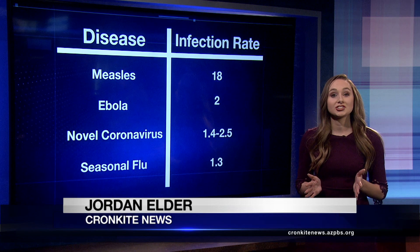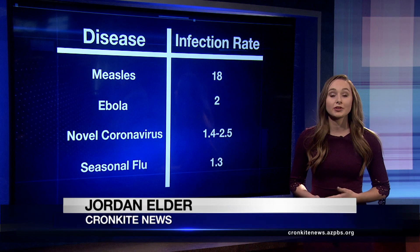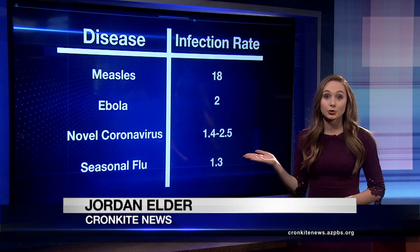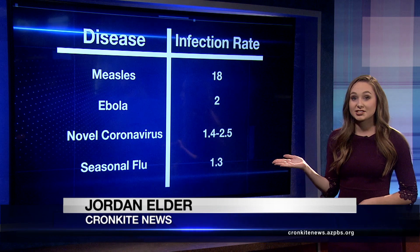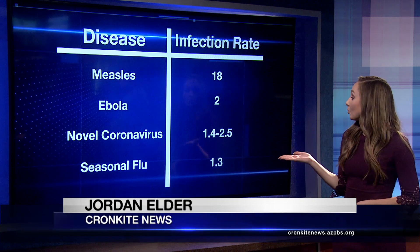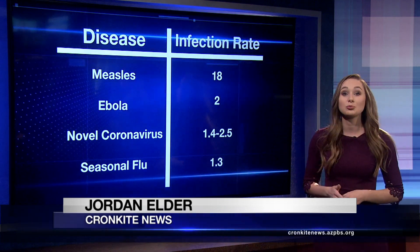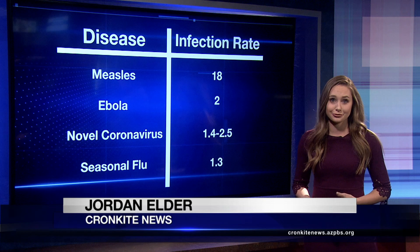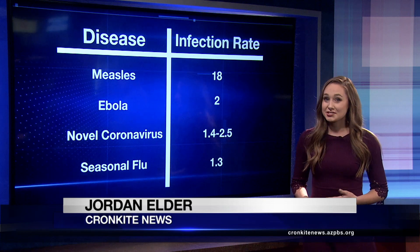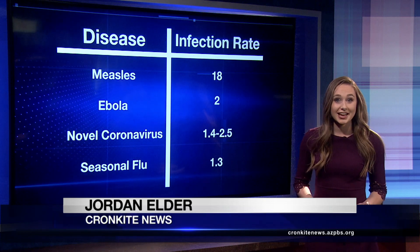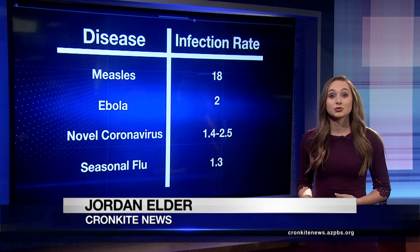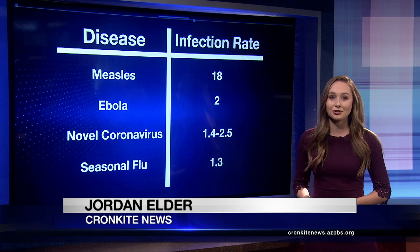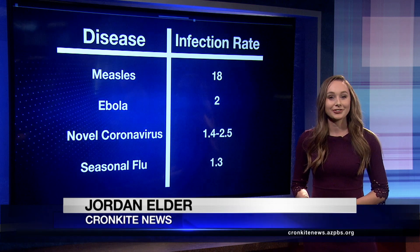Scientists are now working to determine the infection rate of the coronavirus. The World Health Organization estimates the rate between 1.4 and 2.5. For comparison, this is about as contagious as the flu. But because there's no vaccine yet, China is using quarantines and flight restrictions to keep people healthy around the globe.